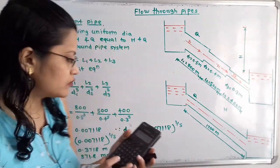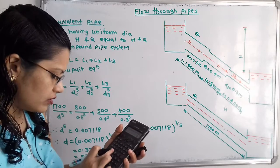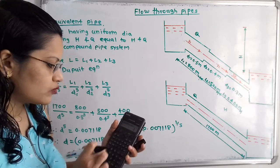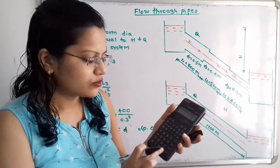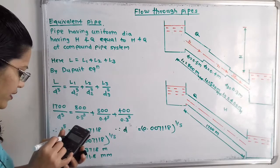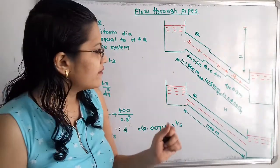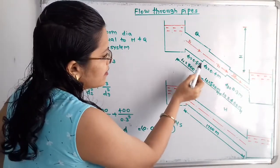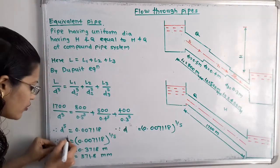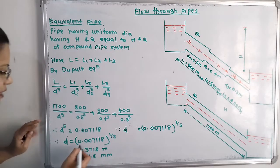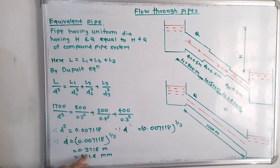To calculate this with a calculator, we enter 0.007118 raised to the power (1/5), making sure to put the bracket: 1 divided by 5 inside the bracket. When we calculate this, we get the answer 0.3718. Since d1, d2, and d3 were taken in standard units of meters, the unit of D is also in meters. Converting to millimeters by multiplying by 10^3 gives 371.8 millimeters. This is the answer.